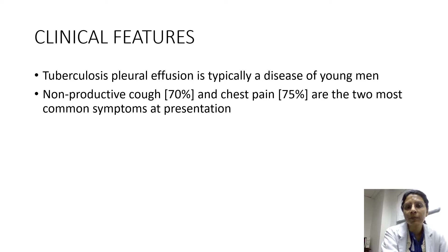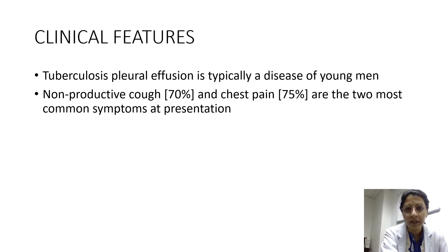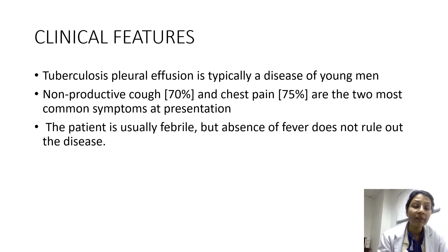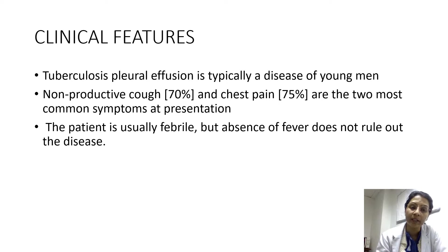What are the clinical features of TB pleuritis? Tuberculosis pleural effusion is typically a disease of young men. They usually present with non-productive cough in two-thirds of cases, and pleuritic type of chest pain — a sharp, stabbing chest pain aggravated on deep inspiration or coughing. The patient is usually febrile, but absence of fever does not rule out the disease. There are episodes of evening rise of temperature, or in secondary infection, fever with chills.